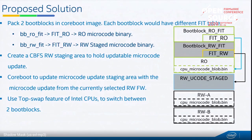This required creating a flash map area for the RW staging area so that the read-write microcode binary gets updated there. We use the Intel top swap mechanism to switch between the two boot blocks. If you want to boot with the microcode from the RW region, you pick the top boot block; if you want to boot with the boot block pointing to the RW staging area microcode, you pick the other boot block below.